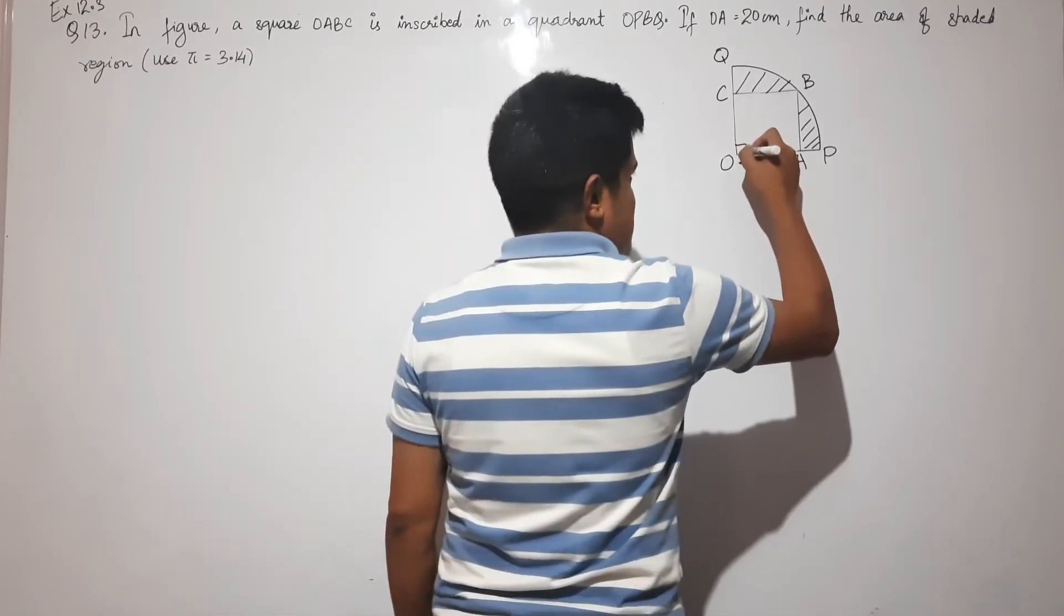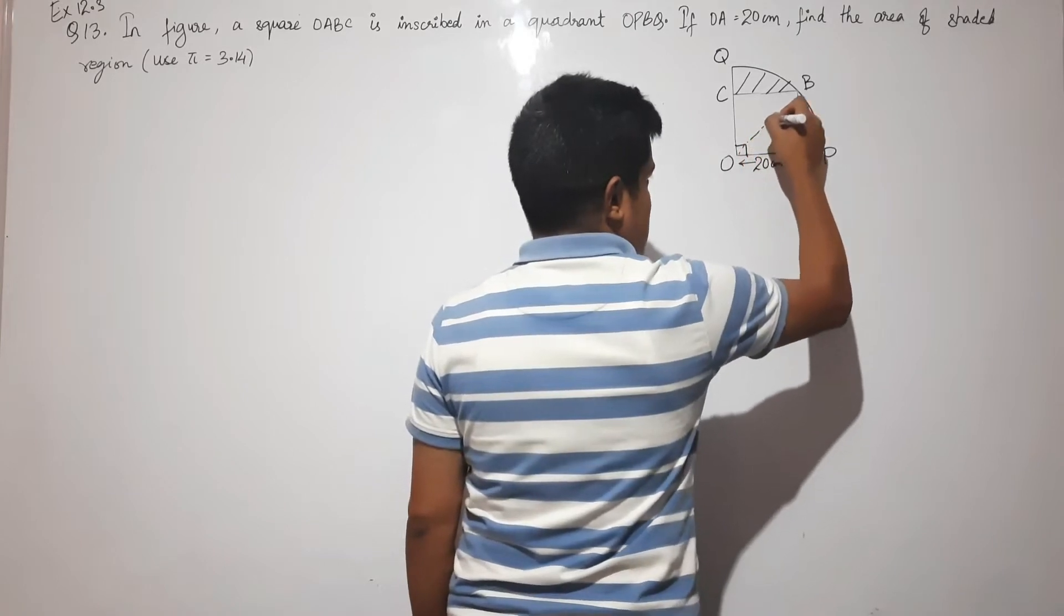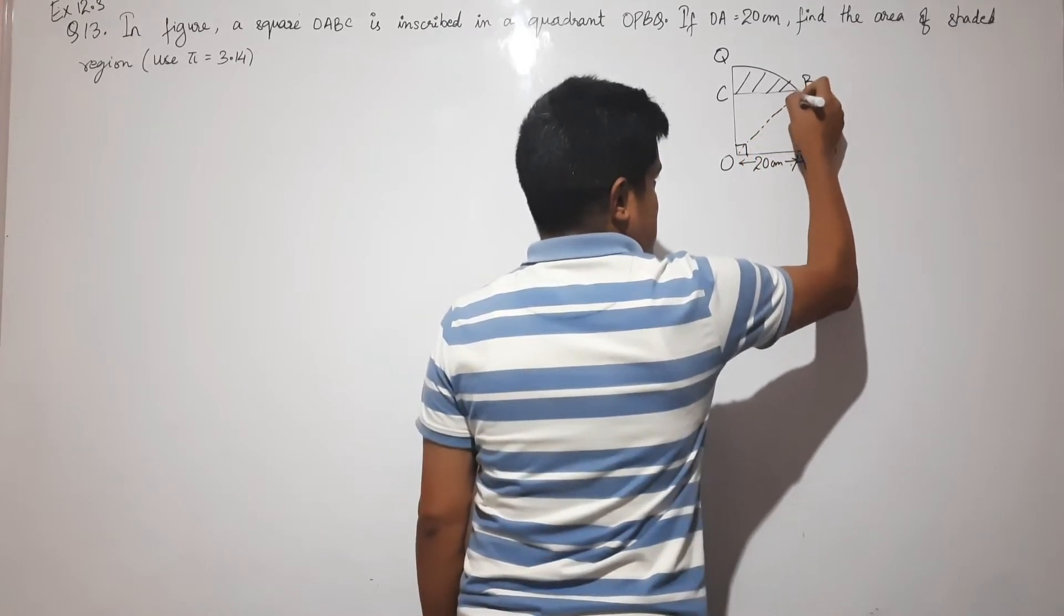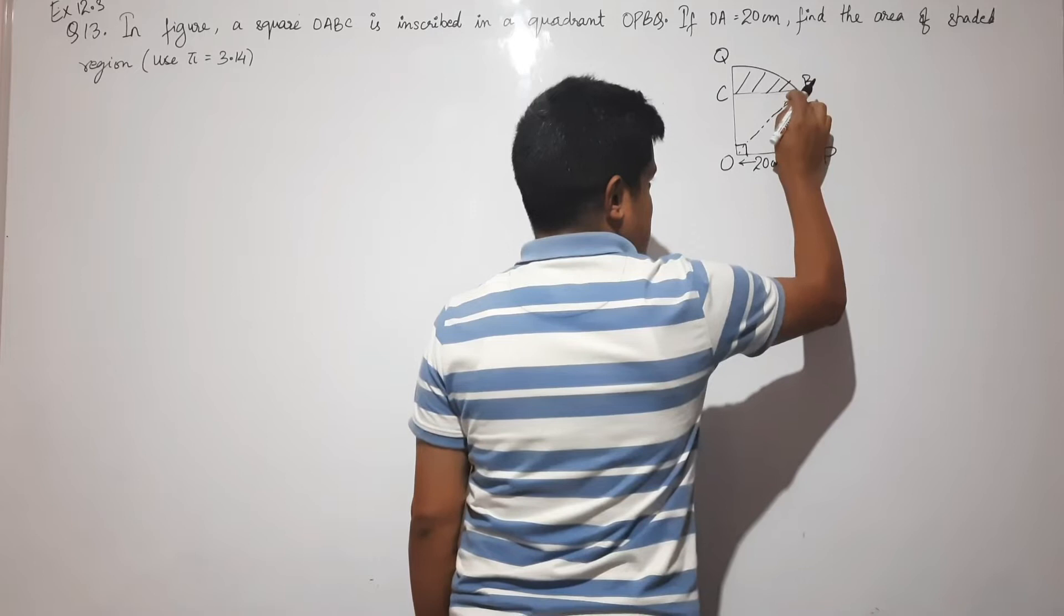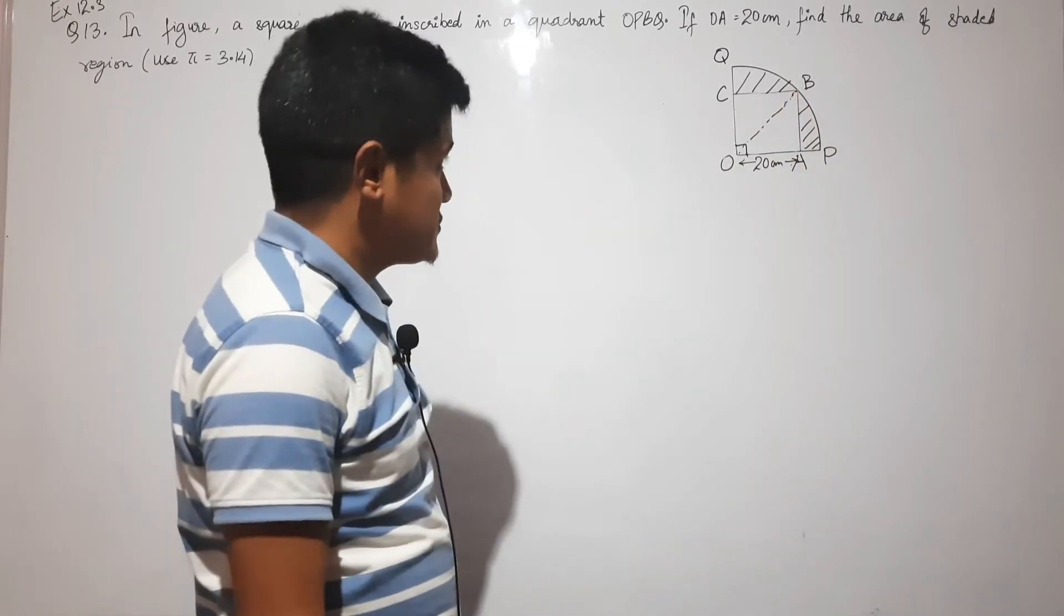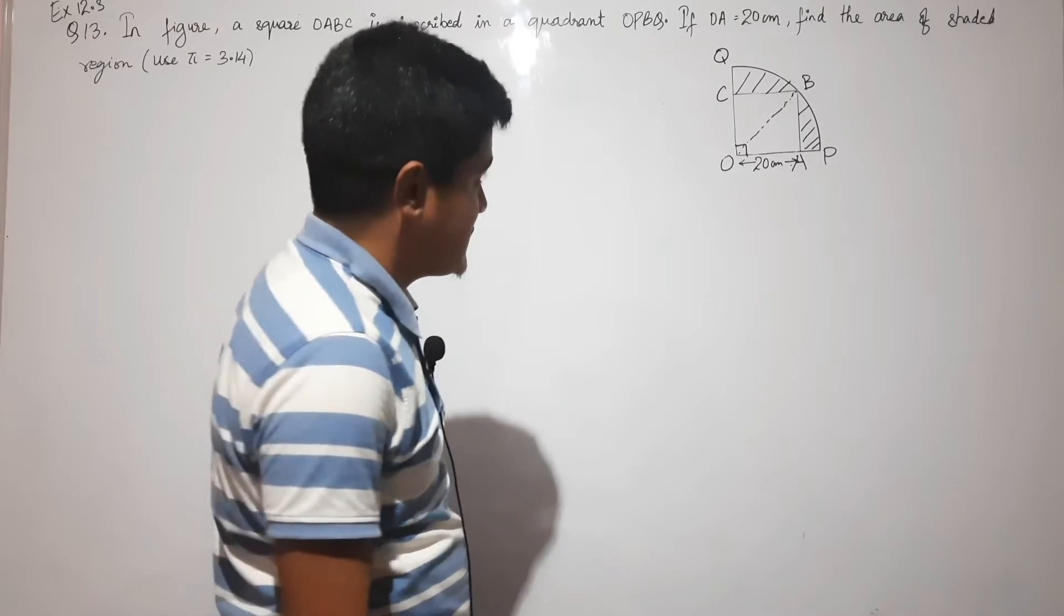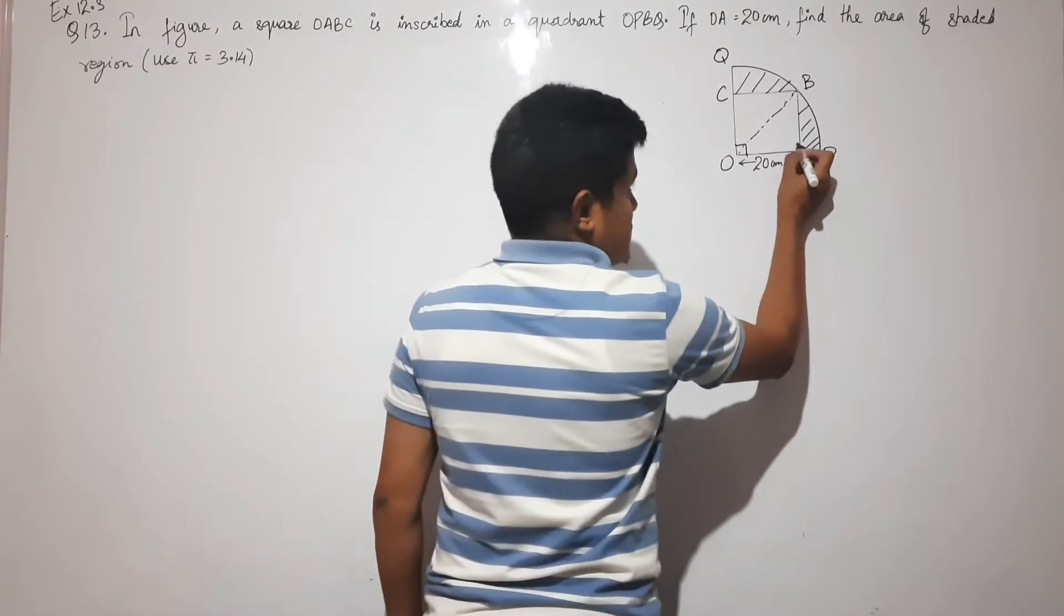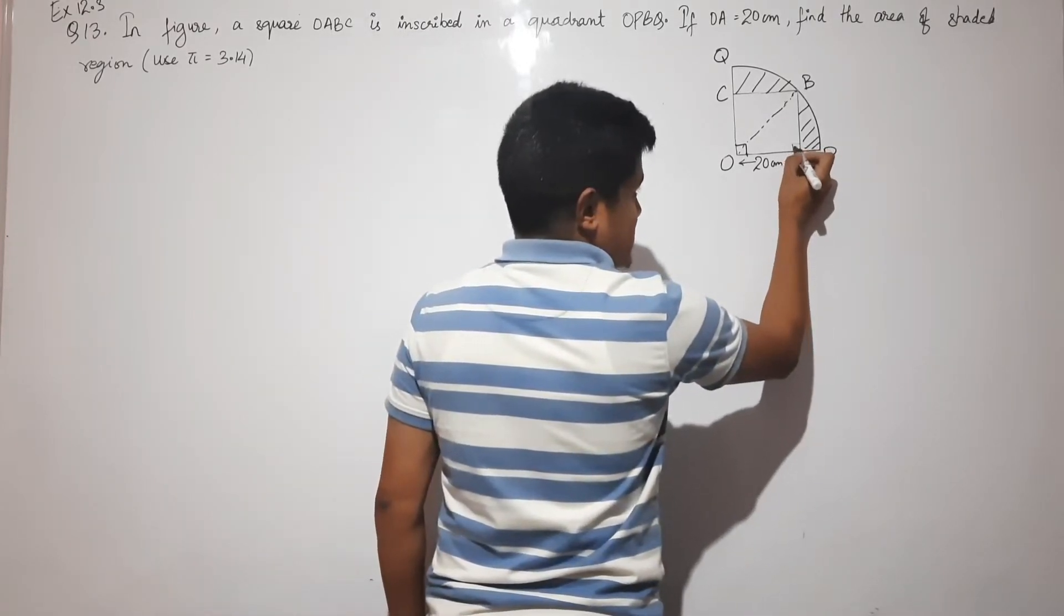So how do we find the radius? If we draw and join OB, OB would be the radius. OB can be found because angle A is also 90 degrees, since it's a square.